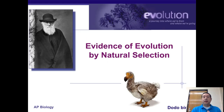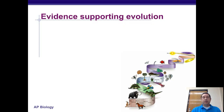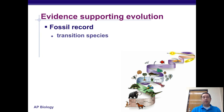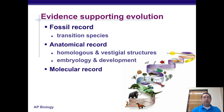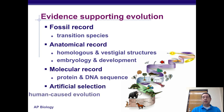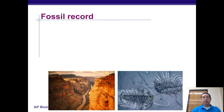In this video, we're going to talk about some of the evidence that supports Darwin's theory of evolution by means of natural selection. The evidence we'll cover includes the fossil record, which shows transitional species; the anatomical record, which includes homologous and vestigial structures as well as embryology and development; the molecular record, which looks at sequences of proteins in DNA and how it shows relationships; and finally, artificial selection or human-caused evolution.